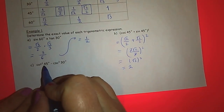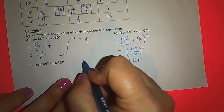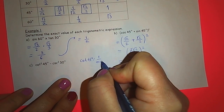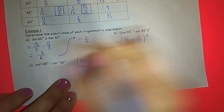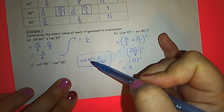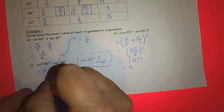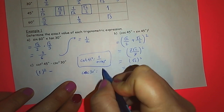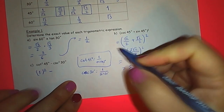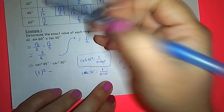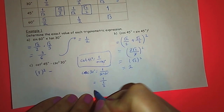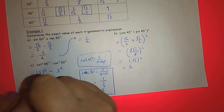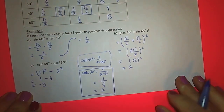Let's look at part c: cotangent squared 45. Cotangent 45 is one over tangent 45. Tangent 45 is one, so cotangent 45 equals one over one, which is one. So we get one squared minus cosine 30... Sine 30 is one over two. So we get one over one over two, which is two. So cosine 30 squared gives two squared, and we end up with one minus four, which is negative three.